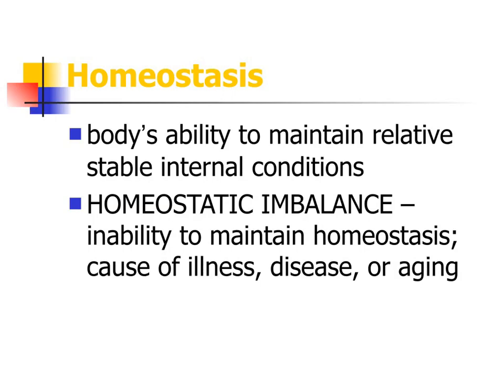For example, when you go to the doctor's office, they weigh you, take your temperature, measure your blood pressure, respiration, and pulse. When your body temperature is not at 98.6 degrees — if it's higher or lower — it could indicate something is wrong, meaning your body is not in homeostasis. If your blood pressure is not 120 over 80 and it's high, it could indicate certain problems with your heart. When you're healthy, your body should maintain a stable internal condition, and all of your systems work to maintain homeostasis.